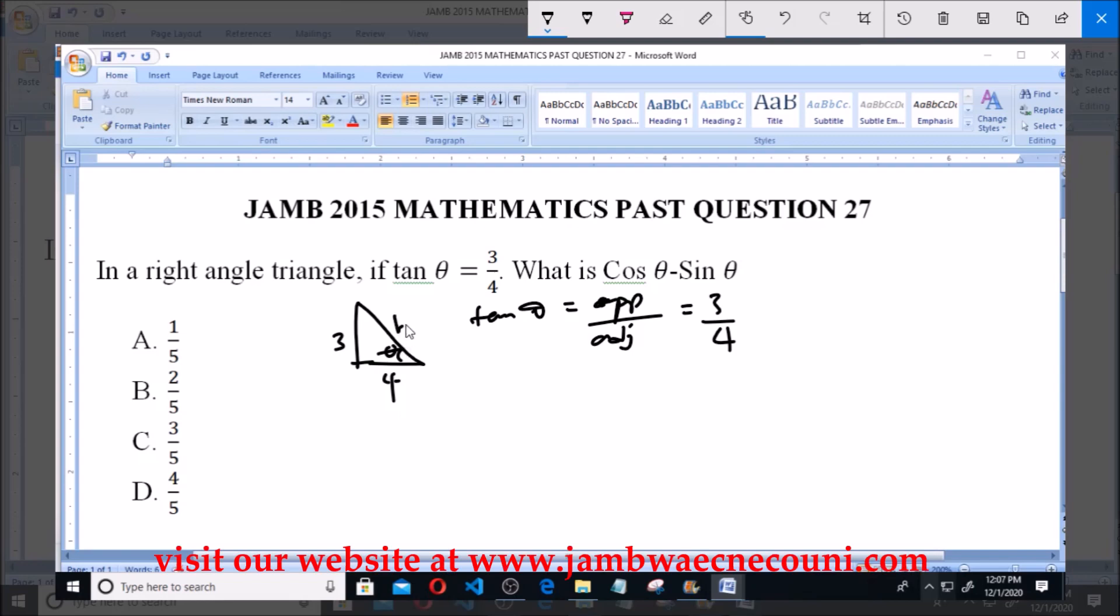To get the hypotenuse, we use the Pythagorean theorem: hypotenuse² = 3² + 4² = 9 + 16 = 25. Therefore, hypotenuse = √25 = 5.